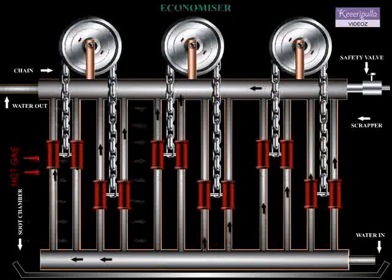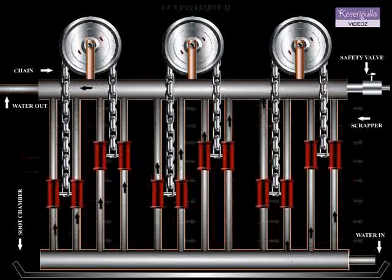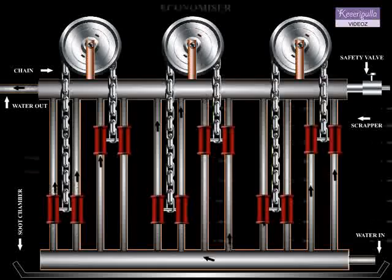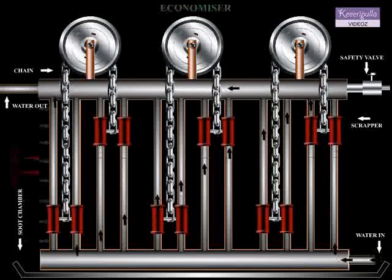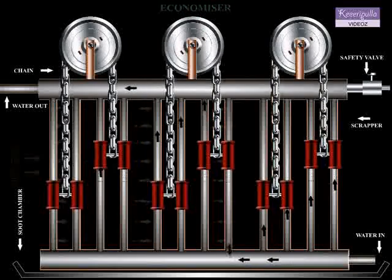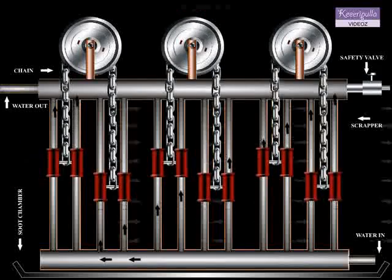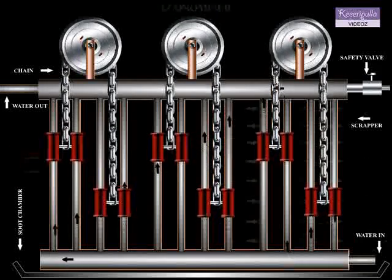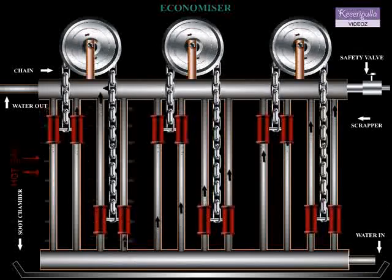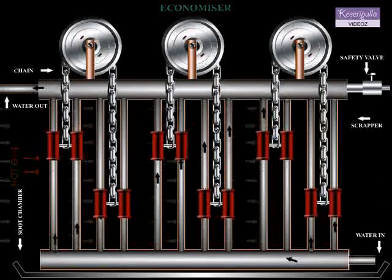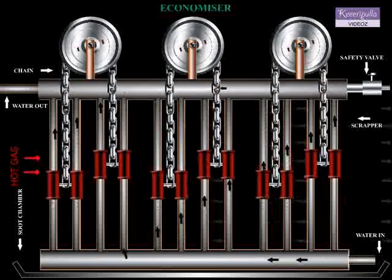This is necessary as the deposition of soot drastically reduces the heat flow rate from the gases to the water. The soot is removed by moving the scrappers over the pipes up and down continuously with the help of a chain and sprocket arrangement.